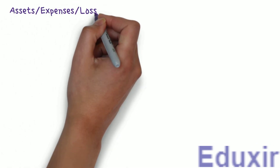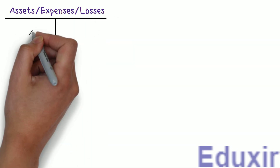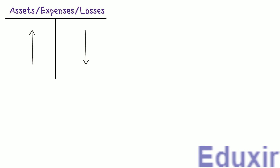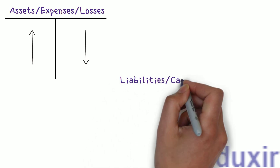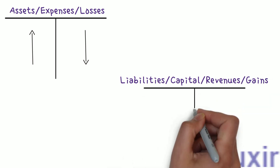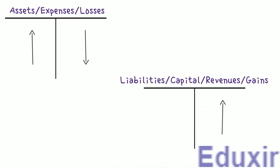Before proceeding with the analysis of these errors, let's first do a small recap. In case of Assets, Expenses, or Losses, any increase in any of these should be debited, and any decrease should be credited. Most of the errors given in the problem are simply errors of partial omission. The rectification would be to post the transaction into the account in which it was omitted. As these are mostly one-sided errors, we will use the Suspense Account on the other side.